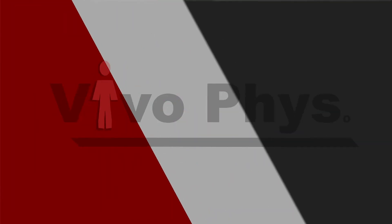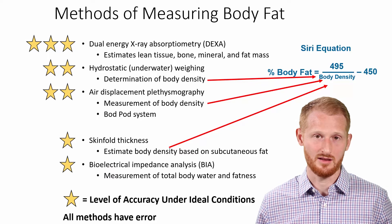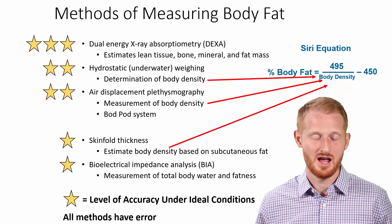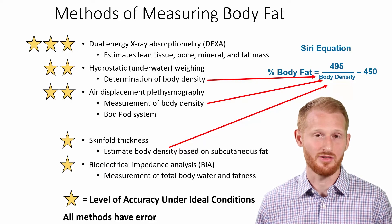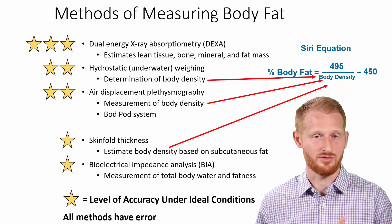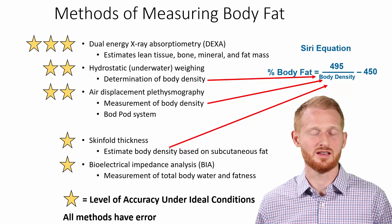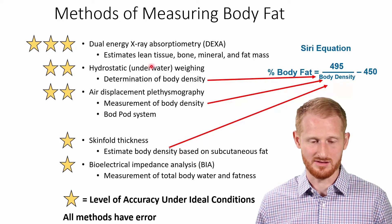Let's switch gears and start talking about how people assess body fat percentage. We're not going to show how to do each one of these, but we're going to talk about the pros and cons of each so you can determine which one may be a good one to use in different situations. This is a list of some of the most common methods of body fat or body composition assessment. There are certainly other ones out there — MRI, ultrasound, various 3D scans — but these are the common ones.